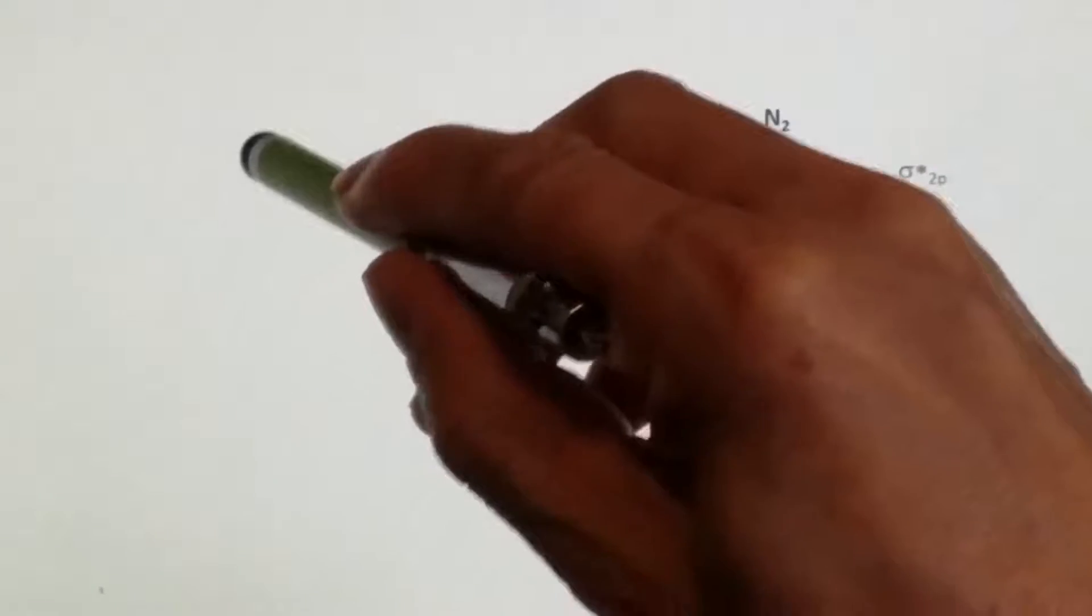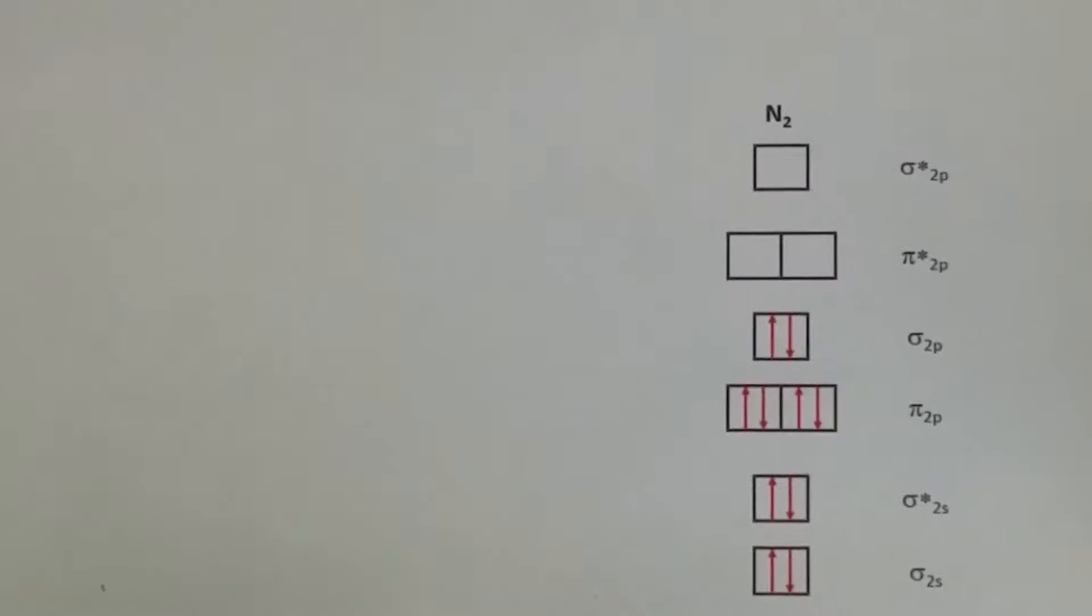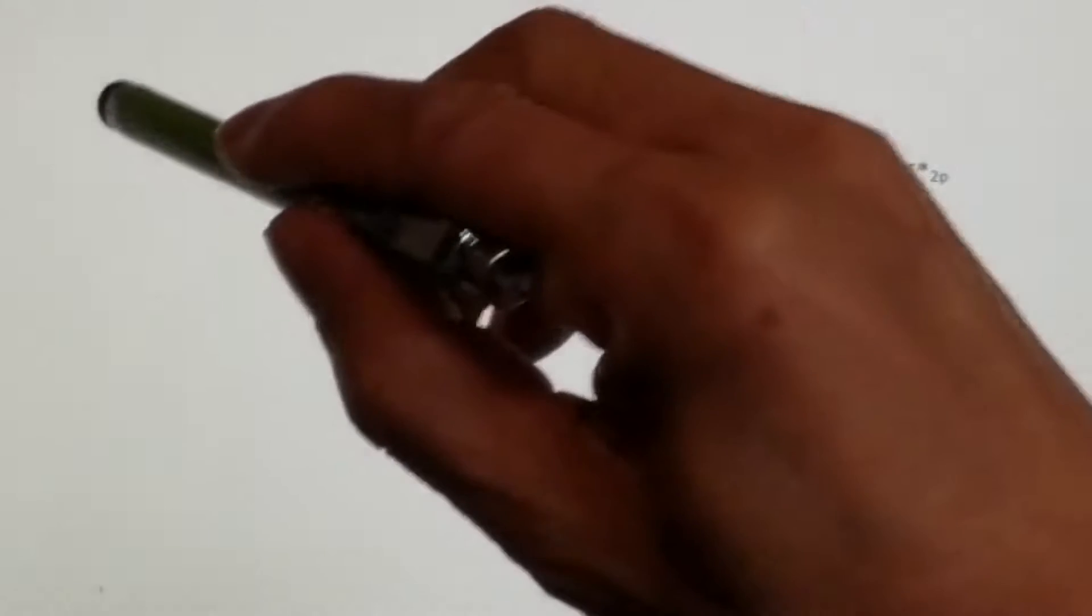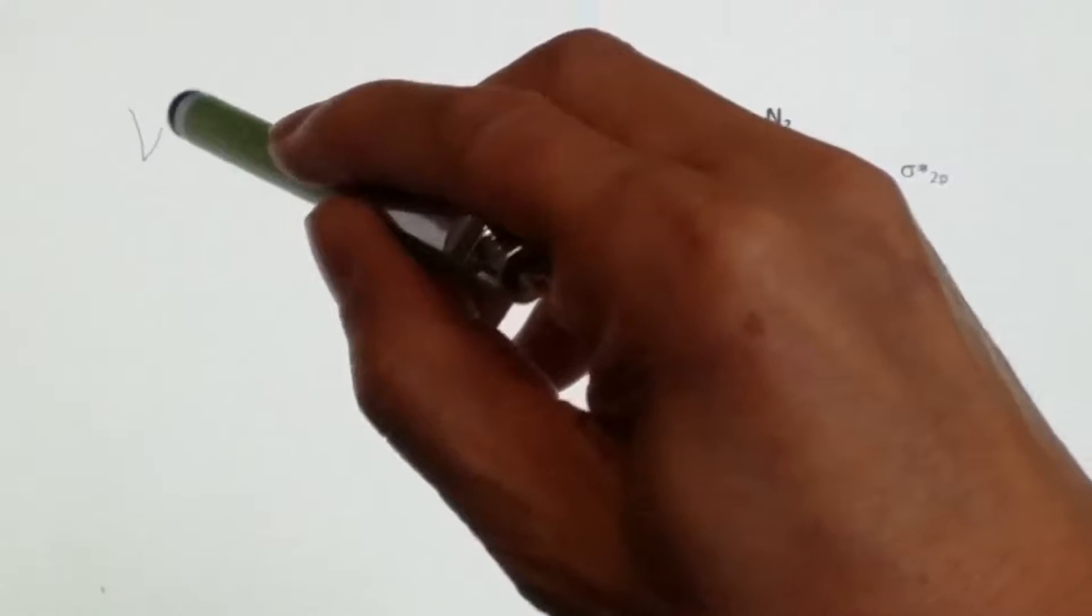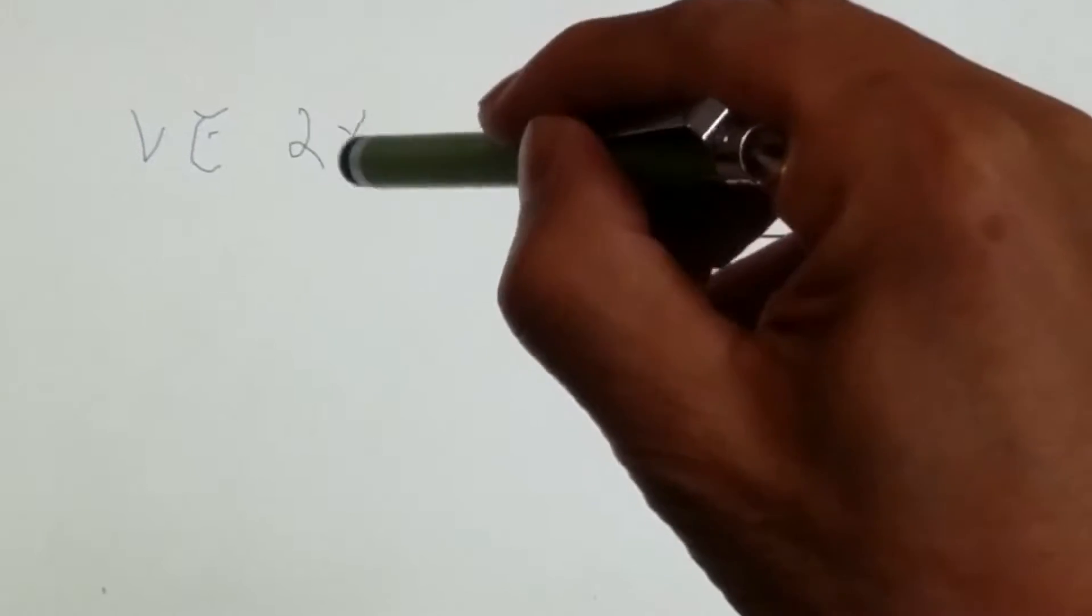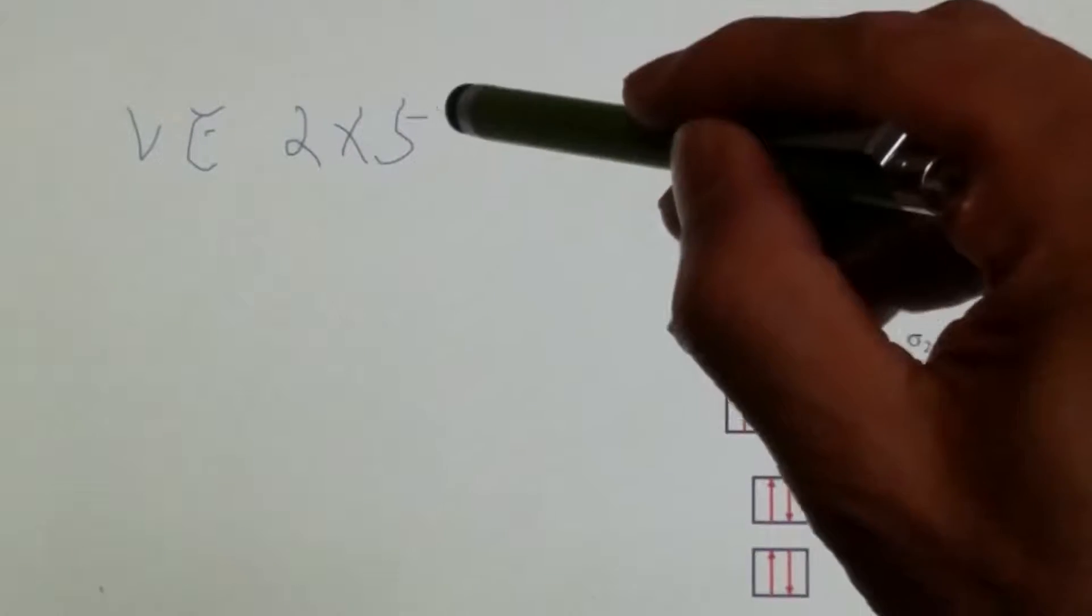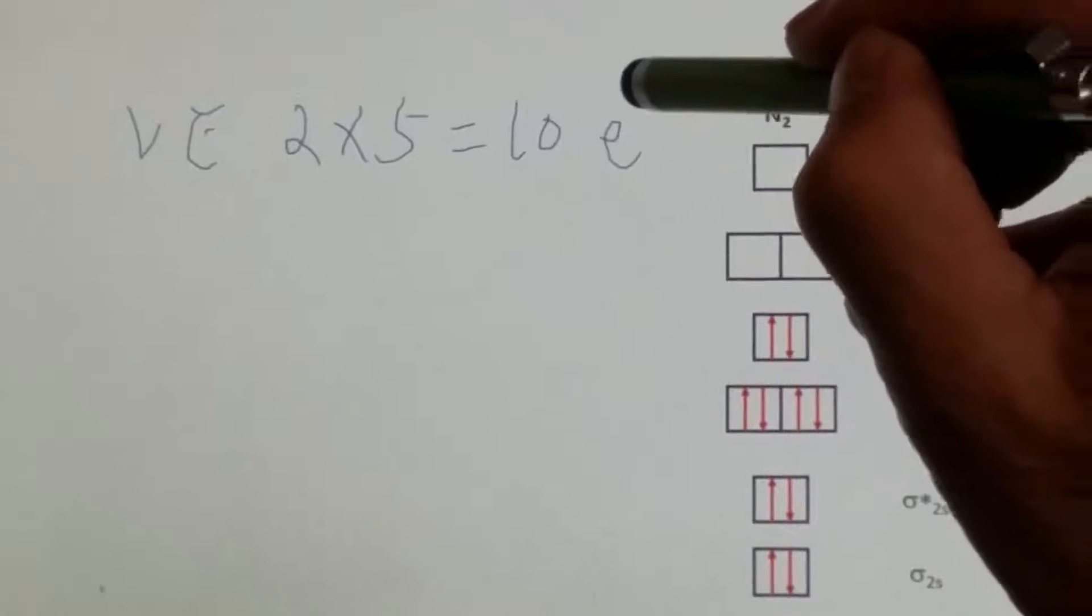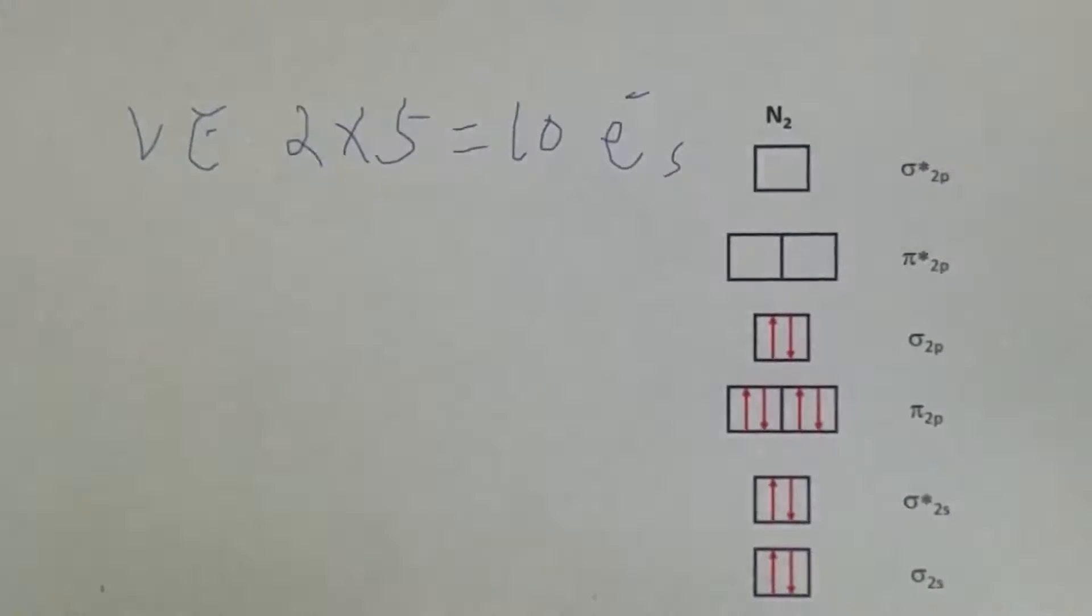Now let's work on nitrogen. Total number of valence electrons: two nitrogen, each has 5 valence electrons, should have a total of 10 valence electrons. As you can see here, we do have 10, starting from sigma 2s, the lowest among all of those, as shown in here.